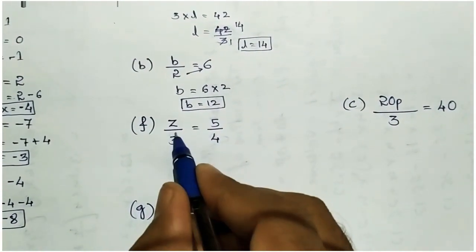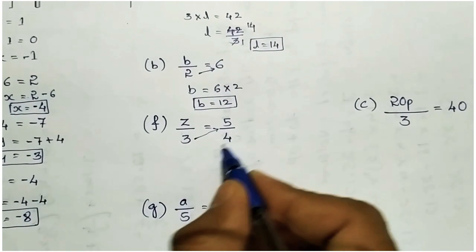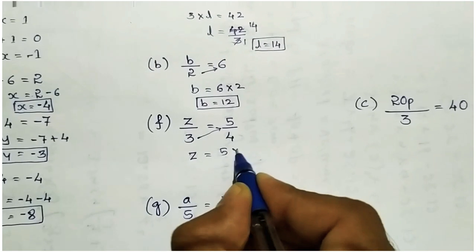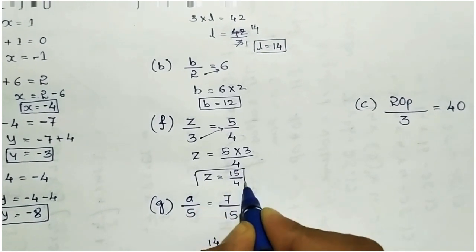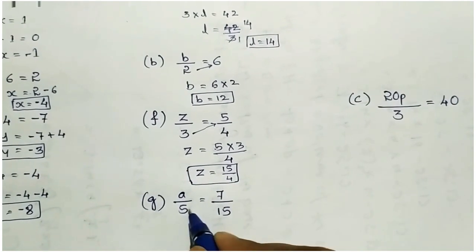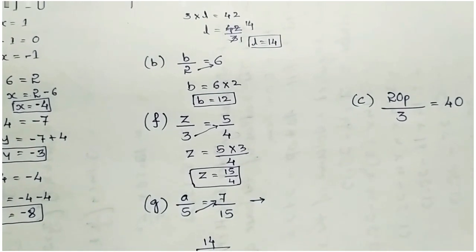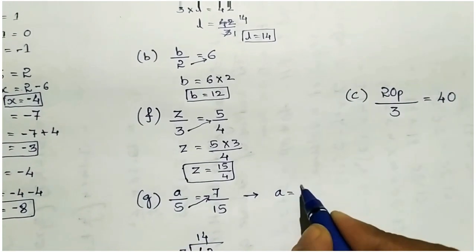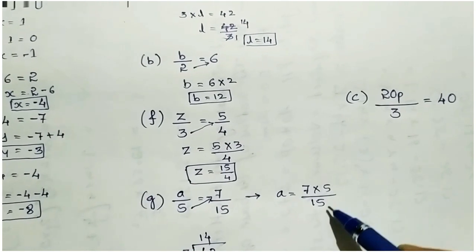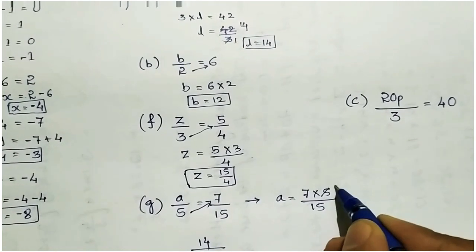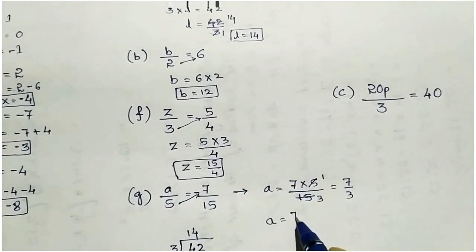Next: z by 3 equal to 5 by 4. If you take 3 to the right side it becomes multiplication, so z equal to 5 into 3 divided by 4, which is 15 by 4. Similarly for the next one: a equal to 7 into 5 divided by 15. At the numerator you get 5 and denominator 15, so you can simplify: 5 ones are 5, giving a equal to 7 by 3.